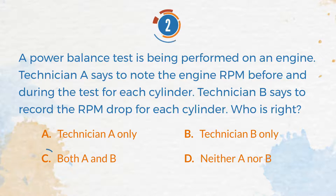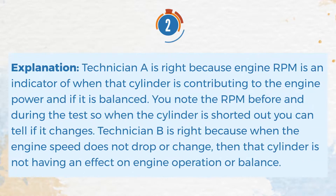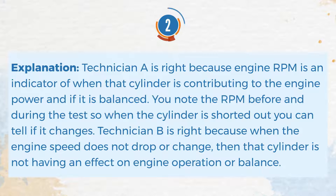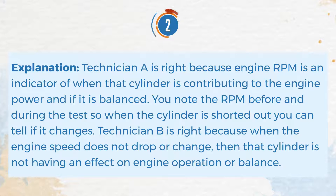The correct answer is C. Both A and B. Explanation: Technician A is right because engine RPM is an indicator of when that cylinder is contributing to engine power and if it is balanced. You note the RPM before and during the test so when the cylinder is shorted out you can tell if it changes. Technician B is right because when the engine speed does not drop or change, that cylinder is not having an effect on engine operation or balance.